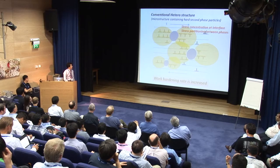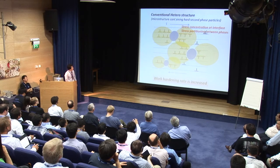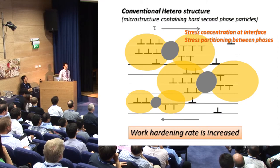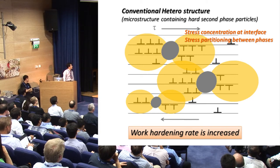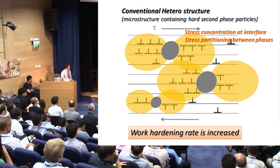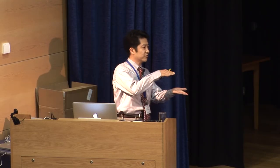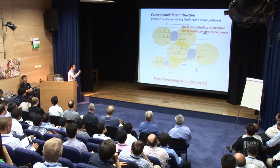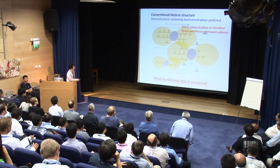Firstly, I'd like to define the term heterostructure. The conventional heterostructure in my talk means a microstructure containing hard second phase particles, such as carbide, martensite, and so on. Imagine the hard second phase exists in the ferrite matrix and strain is given to this material. In that case, dislocations can move in the ferrite phase but cannot go through the hard particles and pile up at the interface.